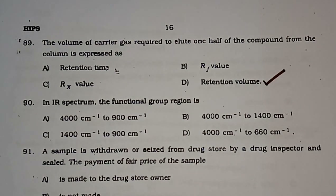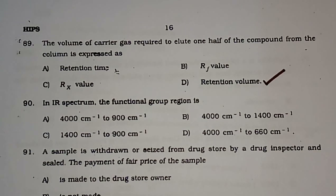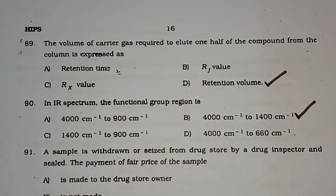Question number 90: In IR spectrum, the functional group region is — 4000 to 900, 4000 to 1400, 1400 to 900, or 4000 to 600. The correct answer is option B — 4000 to 1400 cm⁻¹.